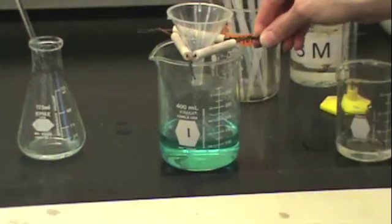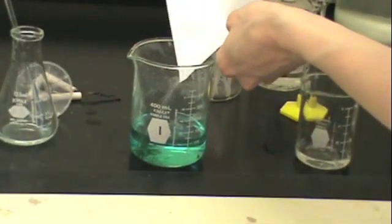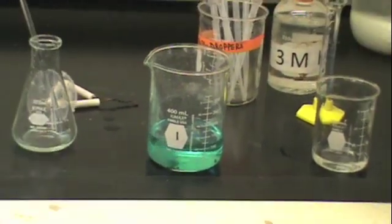In this video, we will demonstrate Part D of the Chemical Reactions Lab. You will need to add 80 milliliters of distilled water to your solution from Part C, then weigh out some zinc and add it directly to this beaker.